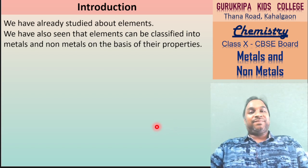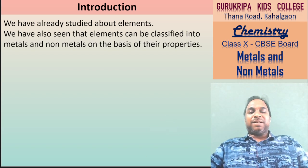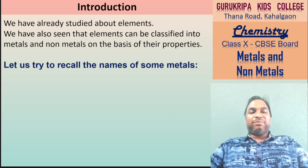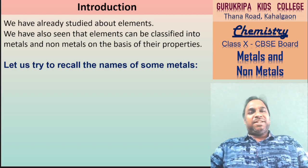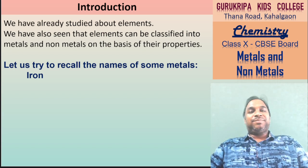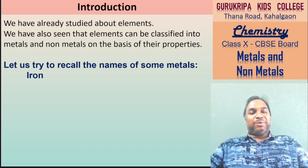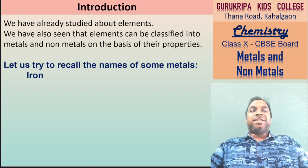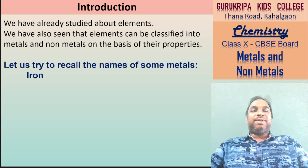याद करो क्या-क्या metals हम लोग पढ़ चुके हैं. कोई भी metal जिससे हम लोग familiar हों. Iron सबसे important है. जहाँ देखो iron मिल जाता है. घर में भी use होता है, construction में use होता है. सबसे cheap भी आज के time पर iron ही metal है.